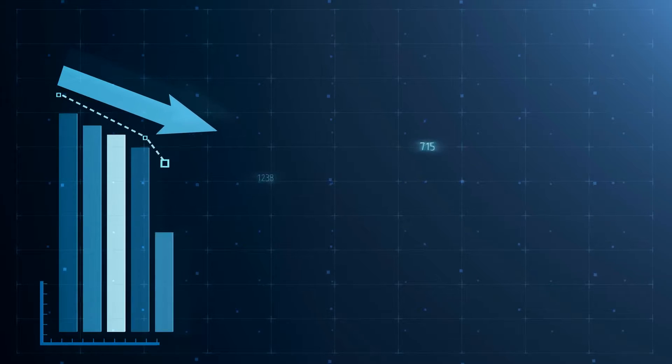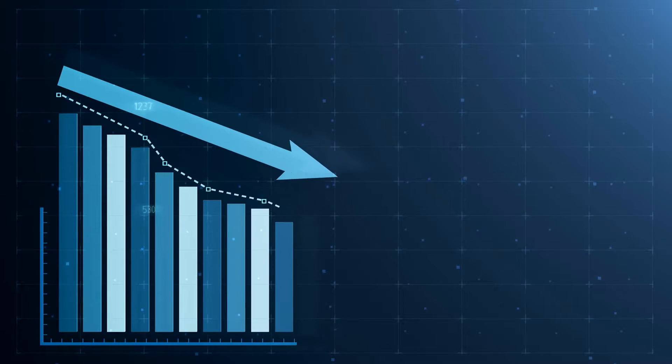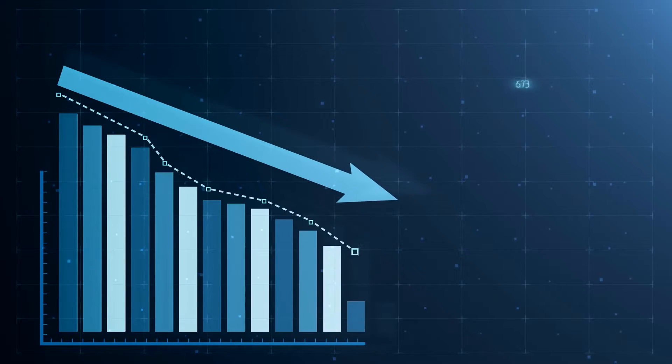If you've had a performance drop recently, you'll be able to figure out if this was, for instance, due to Pmax spending less on shopping, and you'll be able to see how this spend distribution changes over time, giving you a better clue as to where changes in your performance may be coming from.